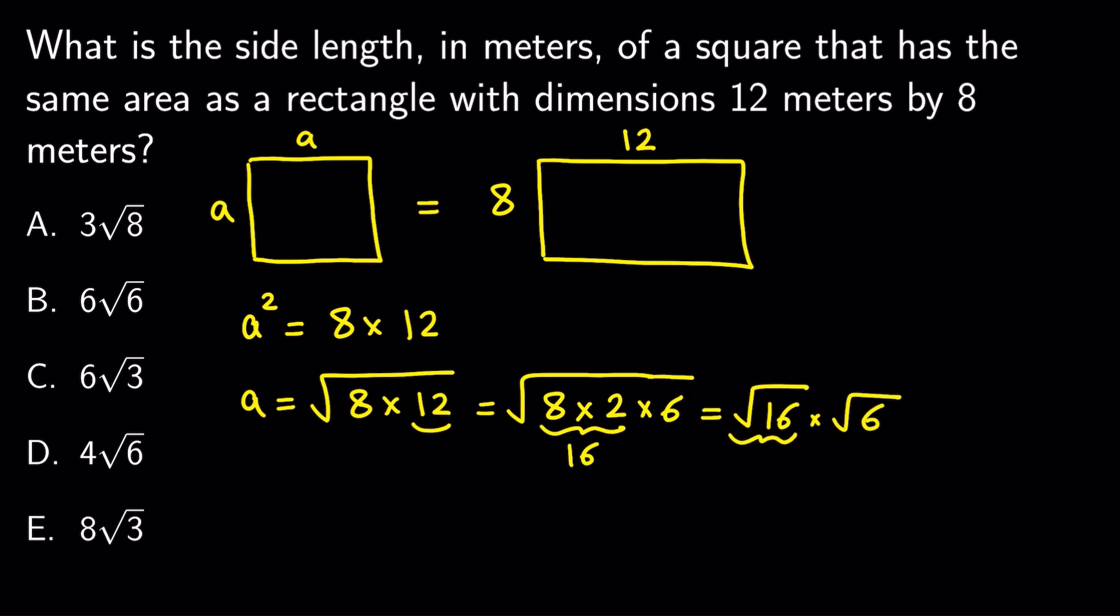Square root of 16 gives us 4. And we get 4 square root of 6. And that's it. The answer is D.